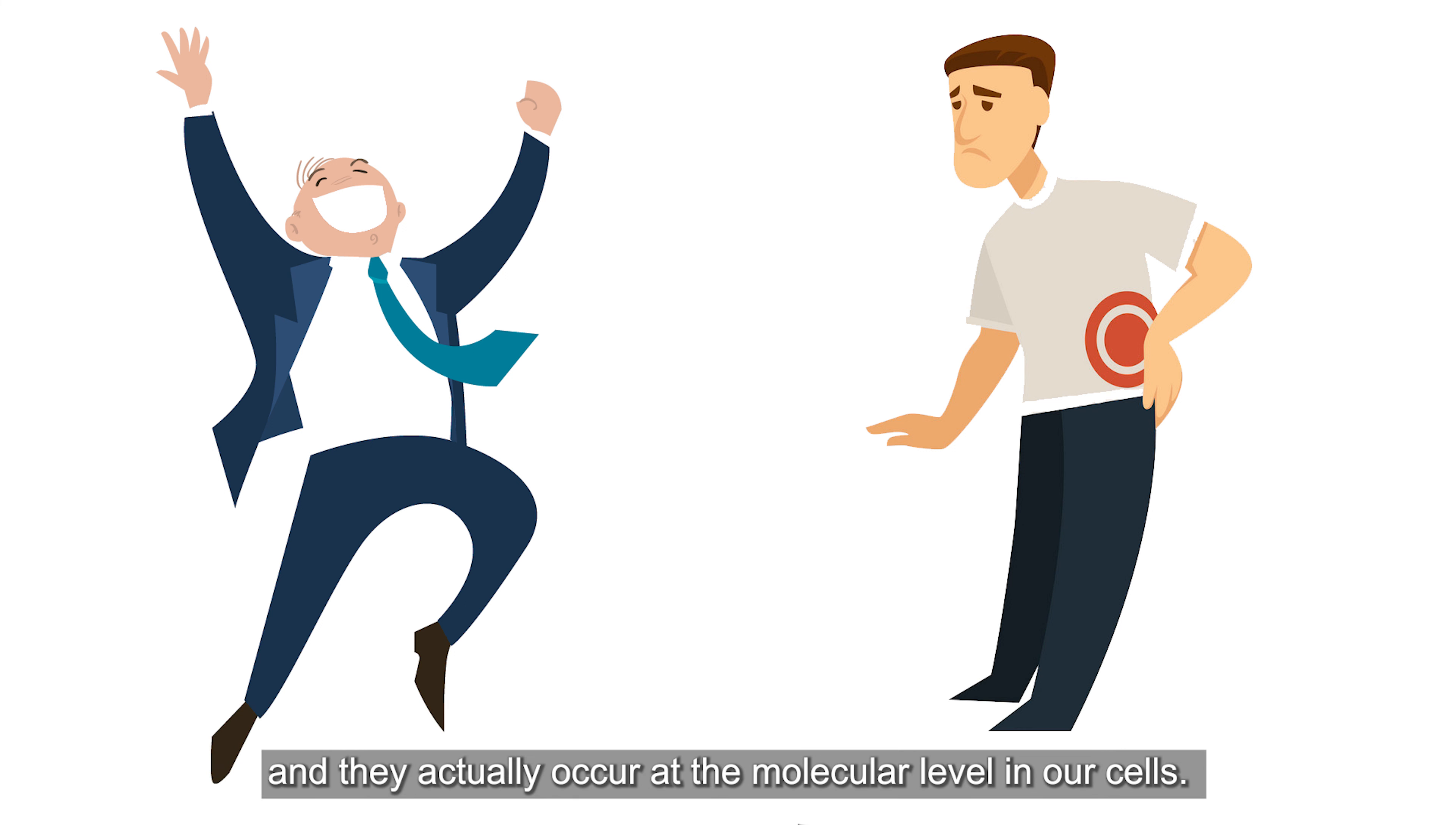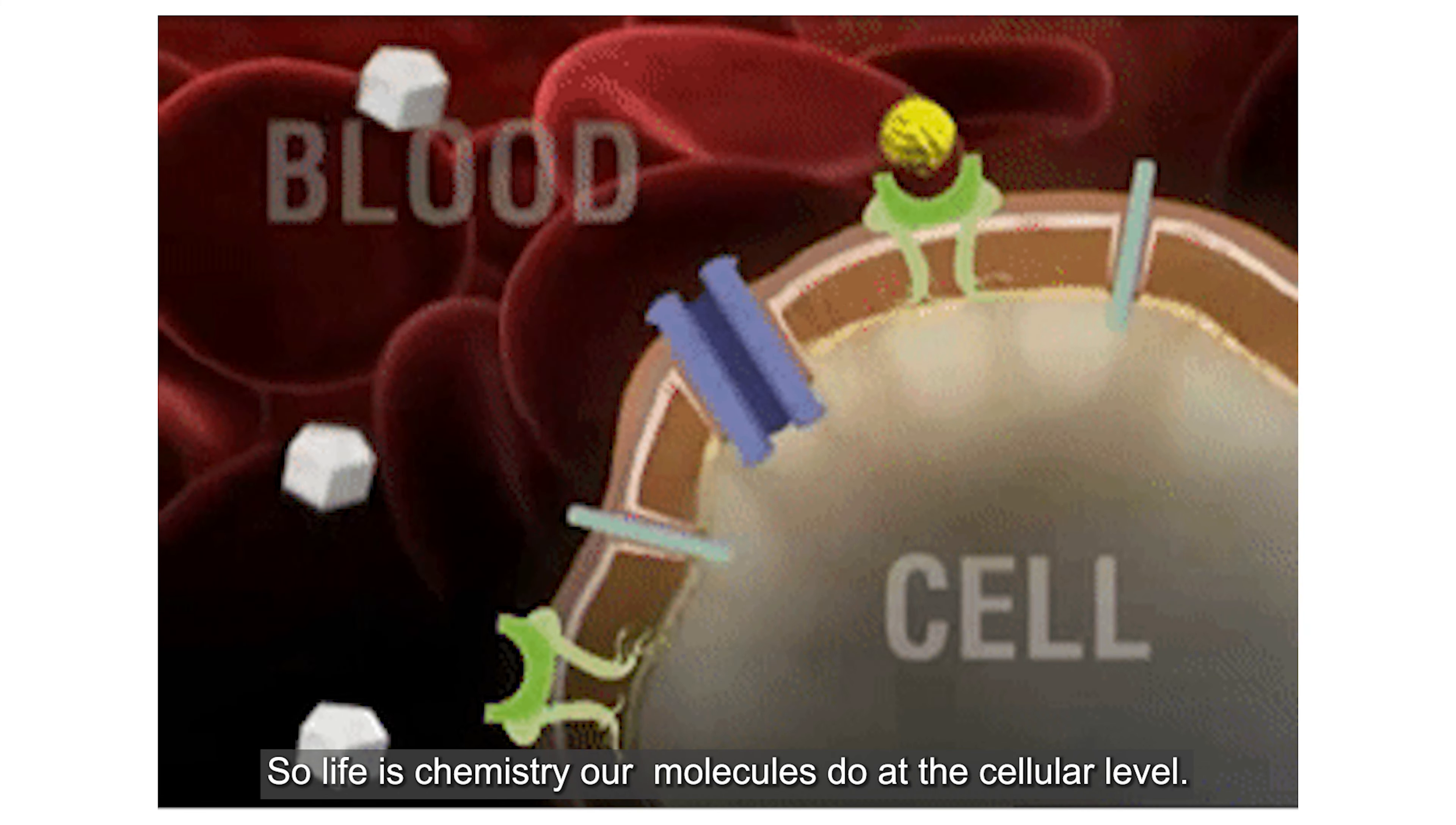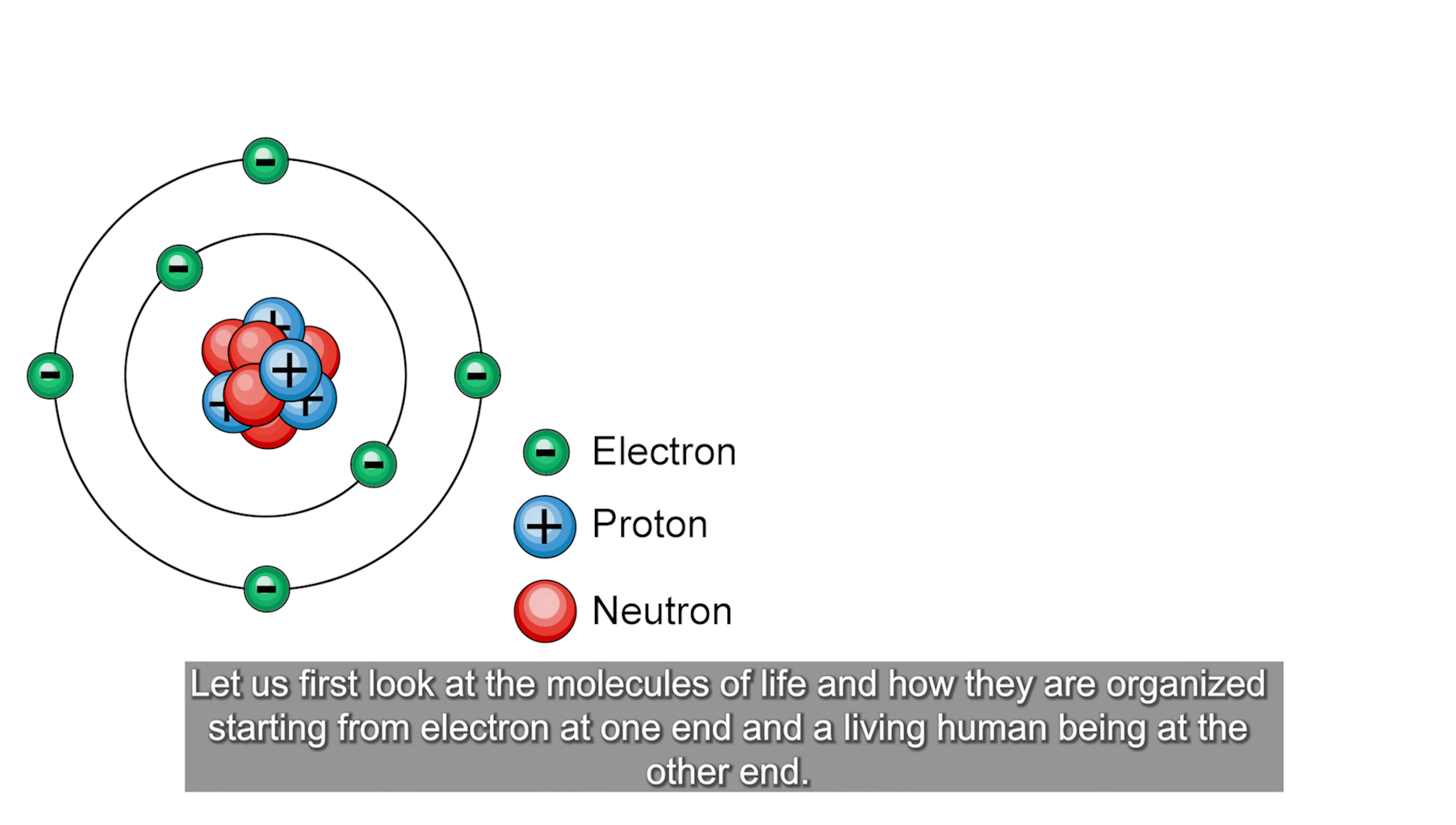All our body functions—breathing, reproduction, metabolism, eyesight, smell and taste, learning and emotion, feeling pain and pleasure—they are all life processes and they actually occur at the molecular level in our cells. So life is chemistry of our molecules happening at the cellular level.